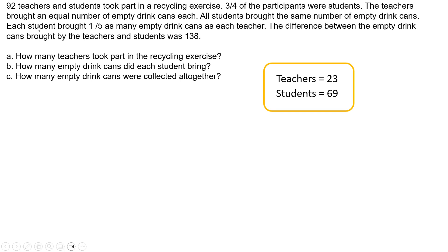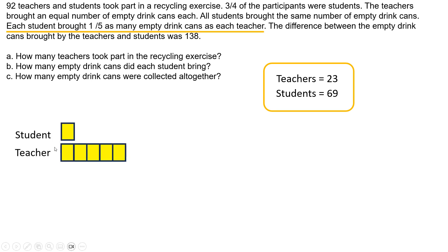That statement is: each student brought 1/5 as many empty drink cans as each teacher. So how do we represent that in a diagram? Each student brought 1 out of 5 as many empty drink cans as each teacher, so the student will have 1 unit and the teacher will have 5 units. The ratio of the number of cans brought by each student versus each teacher is 1 to 5. For example, if the student brought 1 empty can then each teacher would have brought 5 empty cans. And if each student brought 2 empty cans then each teacher would have brought 10 empty cans. This is how we represent the ratio in this scenario.